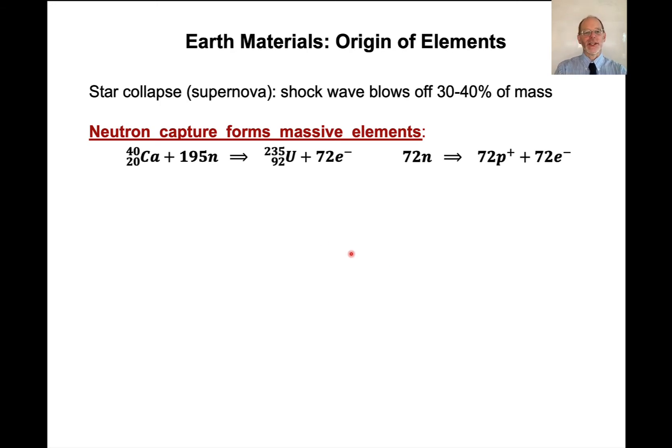This isn't actually what happens, but just imagine that if I took calcium 40, so 20 protons, 20 neutrons, mass of 40, and I fluxed it with 195 neutrons. Okay, it'll actually go through a whole series of elements as it increases mass. But let's just do it all at once.